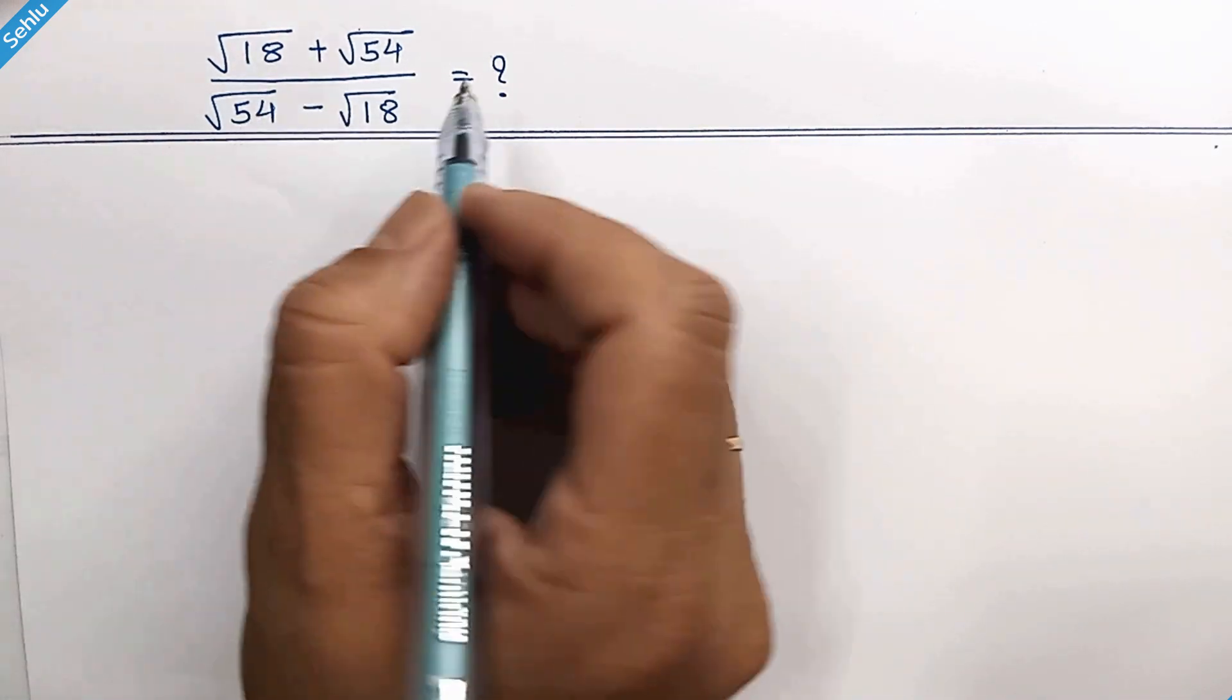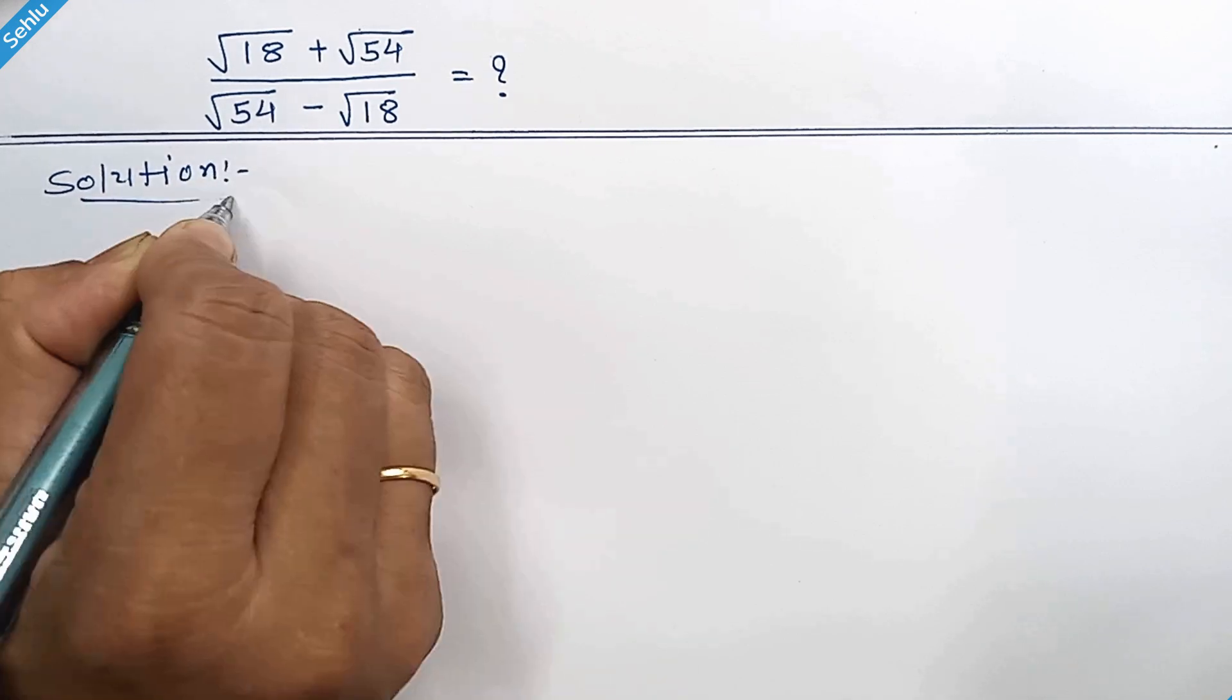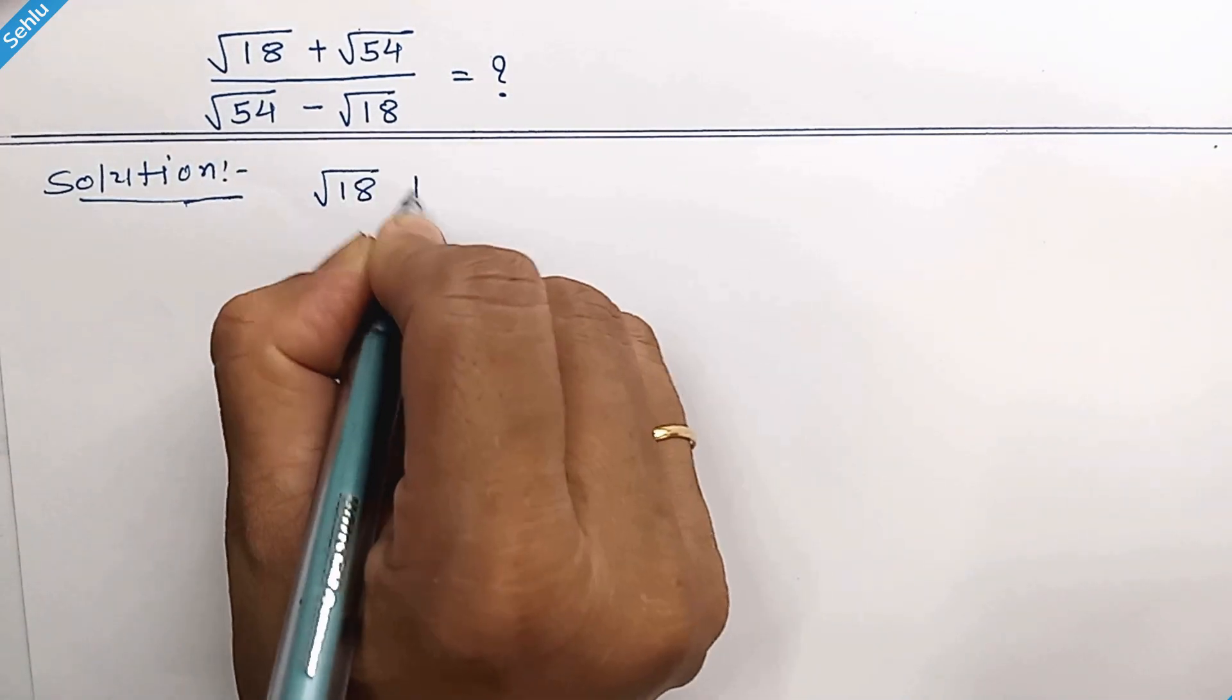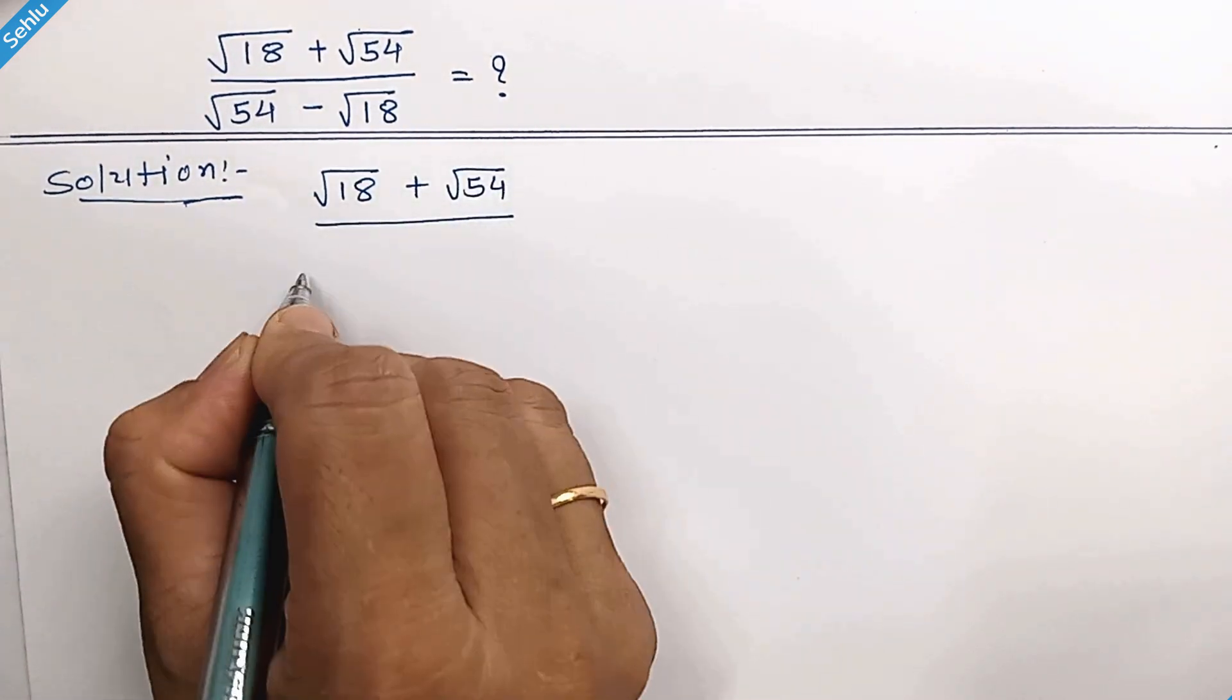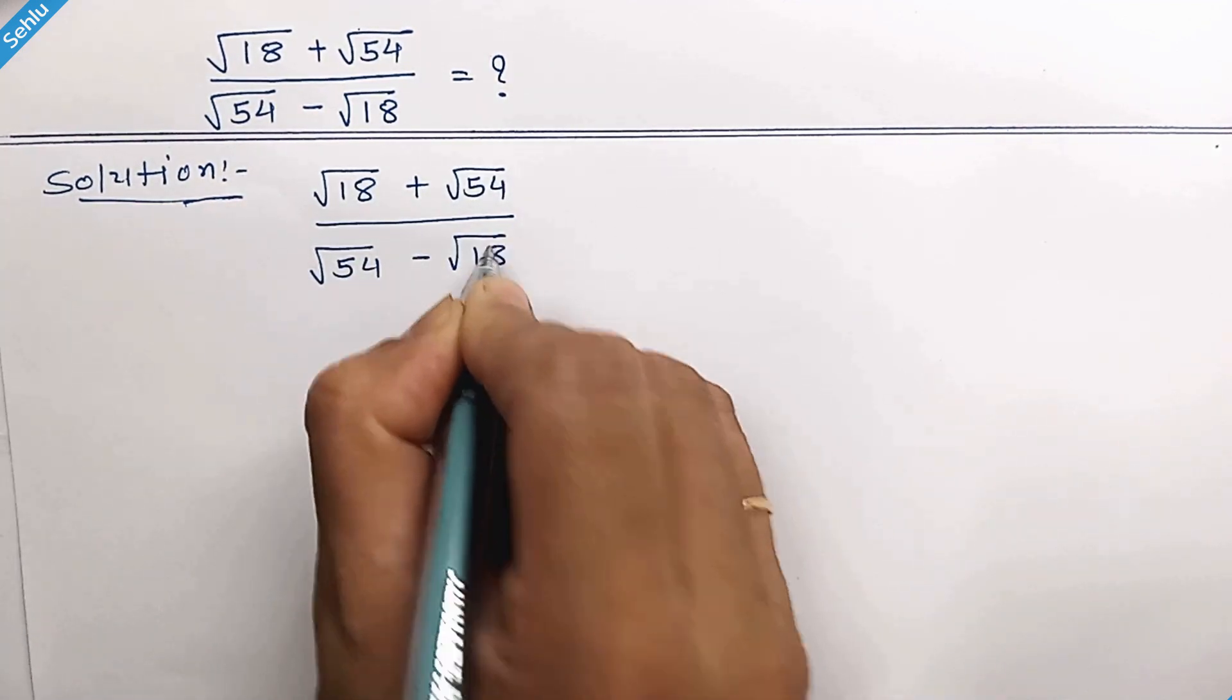Hello everyone, let's simplify this question. The question is: square root of 18 plus square root of 54, over square root of 54 minus square root of 18.